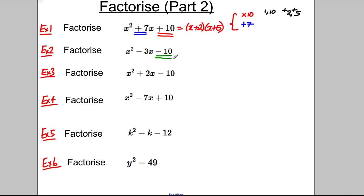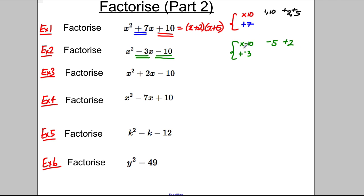Next one. We're looking for two numbers that multiply to negative 10 and add to negative 3. What multiplies to negative 10? Some combination of 10 and 1, but you can never get negative 3 from that. Better would be 5 and 2. How would we get negative 3? If it was negative 5 and positive 2, these combine to negative 3 and they multiply to negative 10. So this factorises as (x − 5)(x + 2).